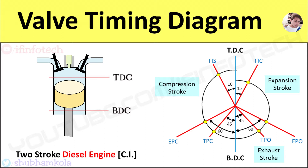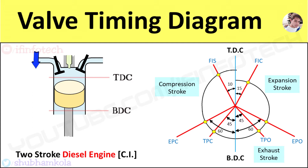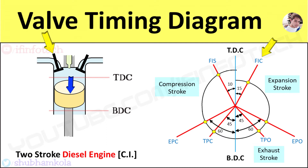In this cycle, before the expansion stroke, at an angle of 10 degrees before TDC position of piston, the inlet valve opens and fresh air enters from the inlet port. The inlet port closes at an angle of 15 degrees after TDC position of piston. Here the fuel is injected in the form of a very fine spray into the engine cylinder.